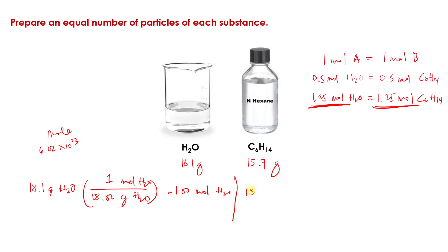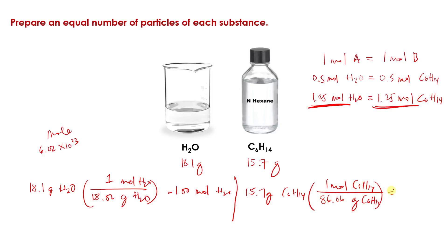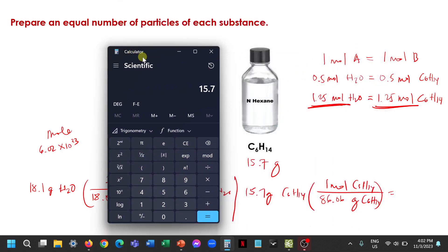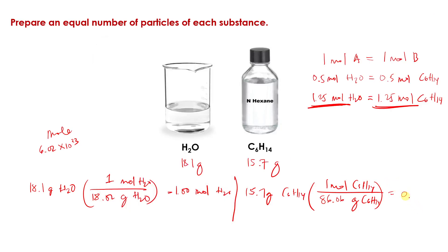Now for the 15.7 grams of C₆H₁₄, let's determine the molar mass of this one. The molar mass of C₆H₁₄ is equal to 86.06 grams per mole. So we have 15.7 divided by 86.06, which gives us 0.182 — we have three sig figs — so 0.182 moles of C₆H₁₄.